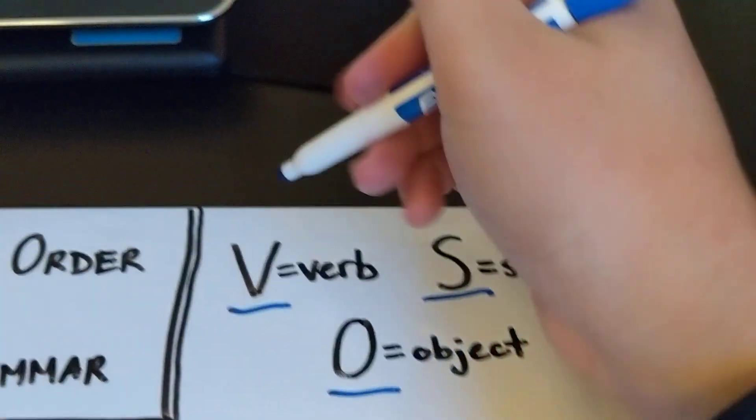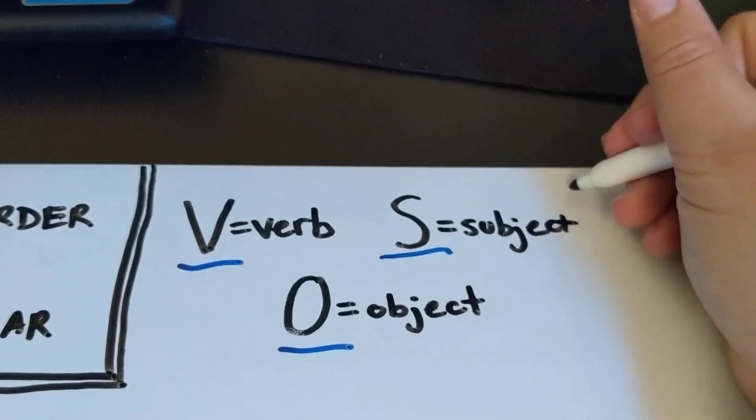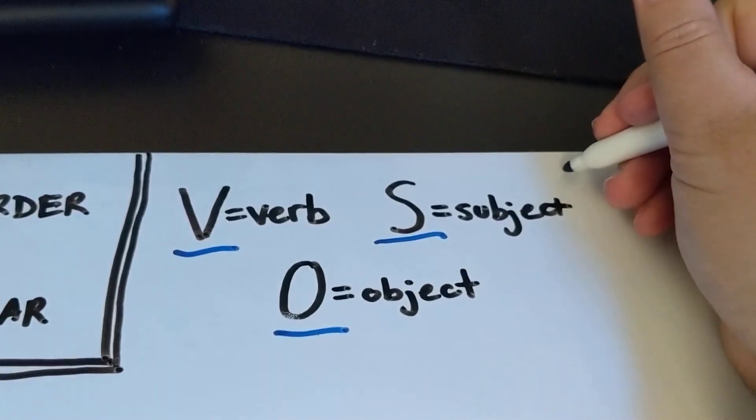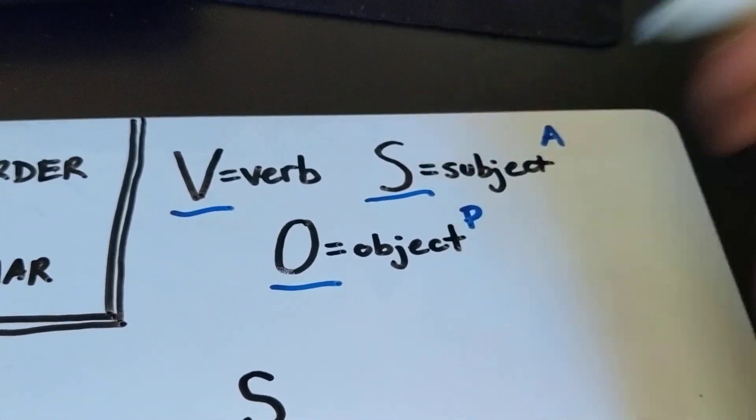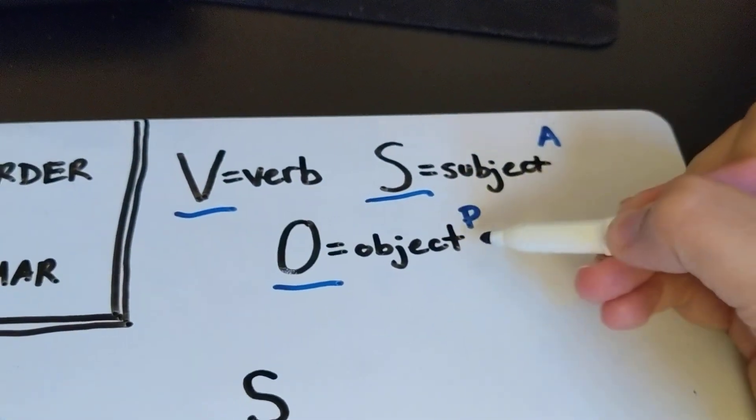So this would be, if we're talking about our labeling that we've done with subject and object alignment, this would be whatever we call A, and this is whatever we call P. So that's another way to think of subject and object.